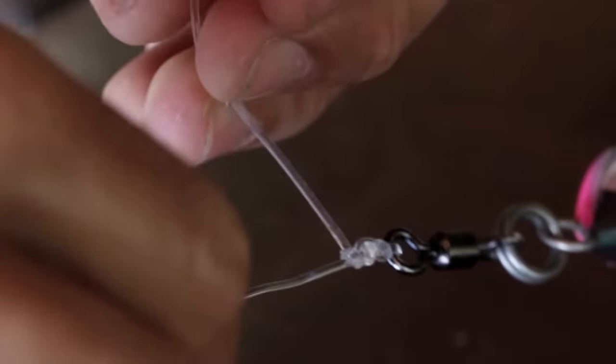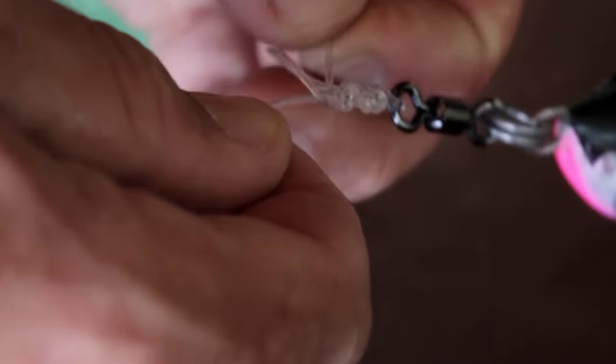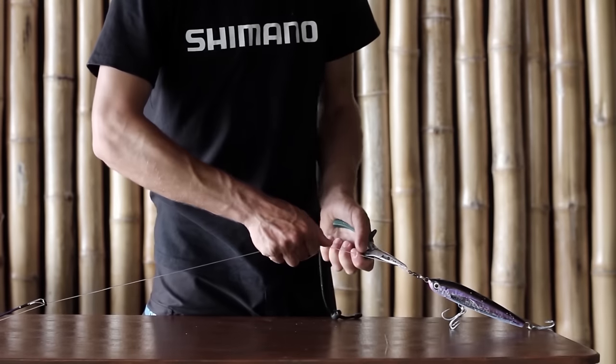Be sure to moisten the knot after every second half hitch. The knot needs a minimum of eight alternating half hitches to be complete, and on the last hitch, tighten it down to lock it in place with a pair of pliers.